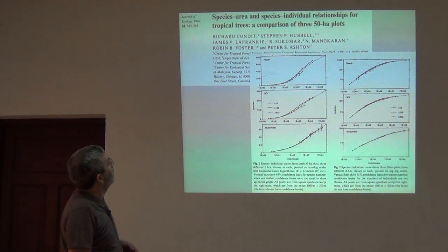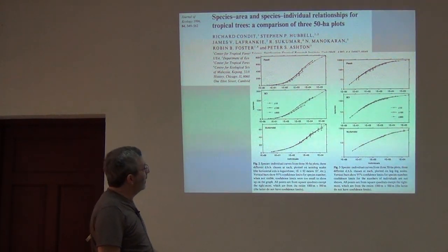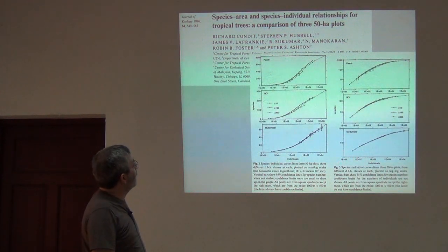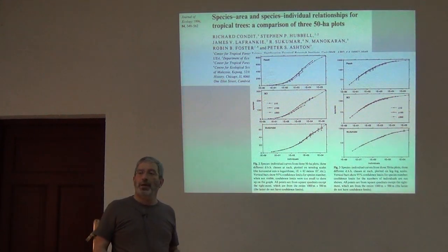Here's another example. This is a study species area and species individual relationships for tropical trees, a comparison of 350 hectare plots. And so, this is looking at the accumulation of species as you go over larger and larger numbers of individuals.